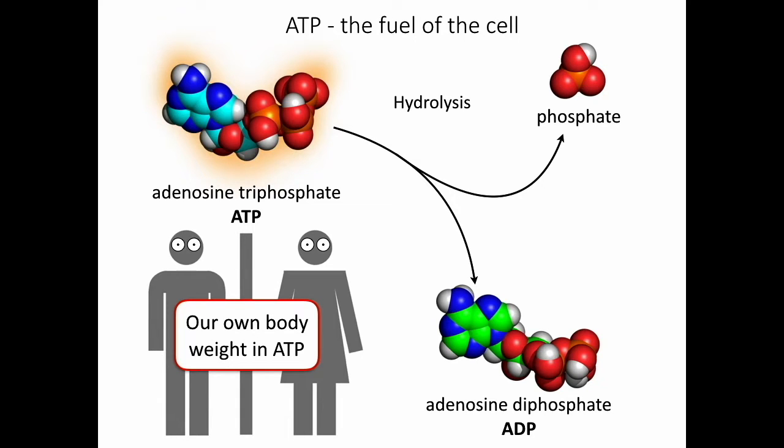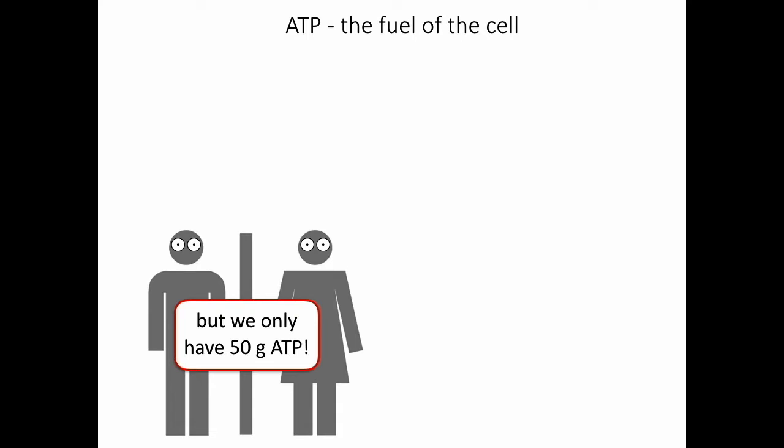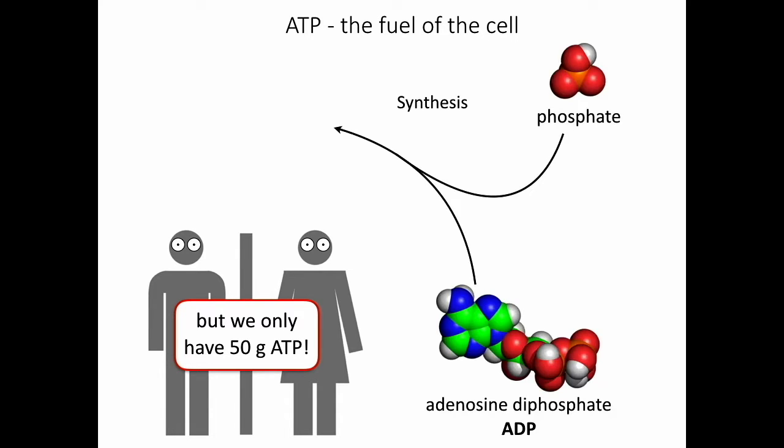We humans need our own body weight in ATP every day to sustain our activities. But there's a problem. We only have 50 grams of ATP in our body, and thus we need to remake ATP time and time again in a process called ATP synthesis.